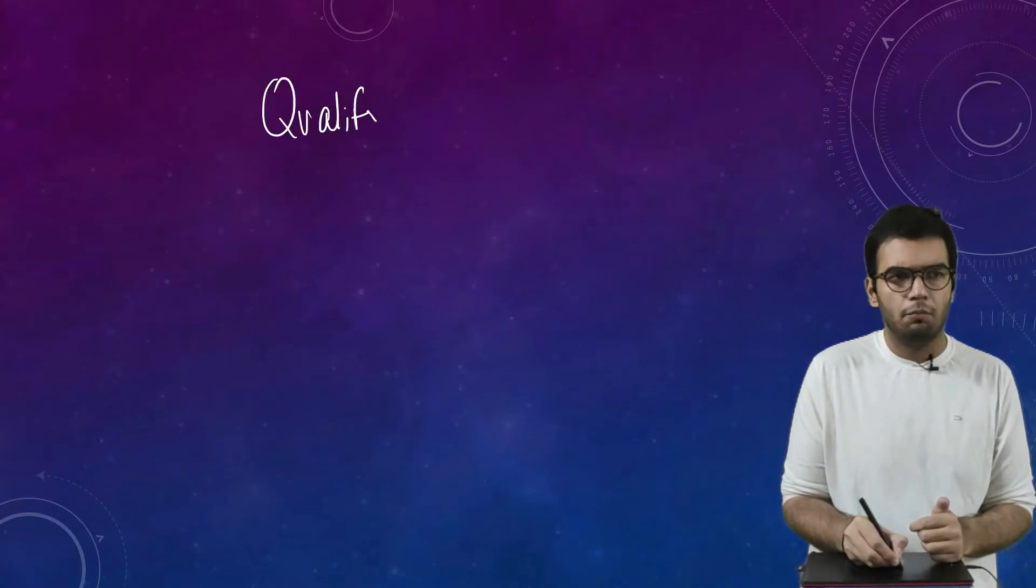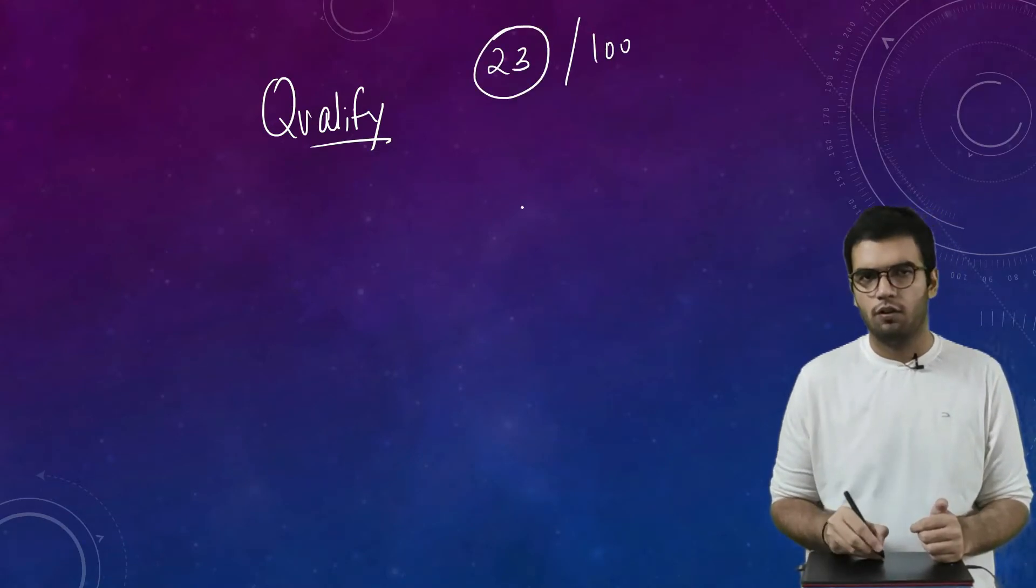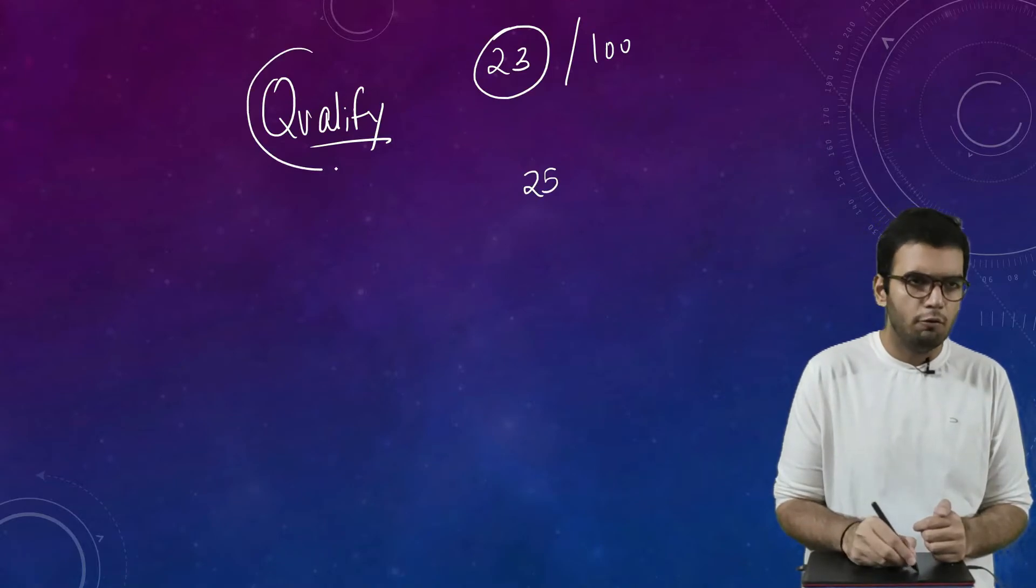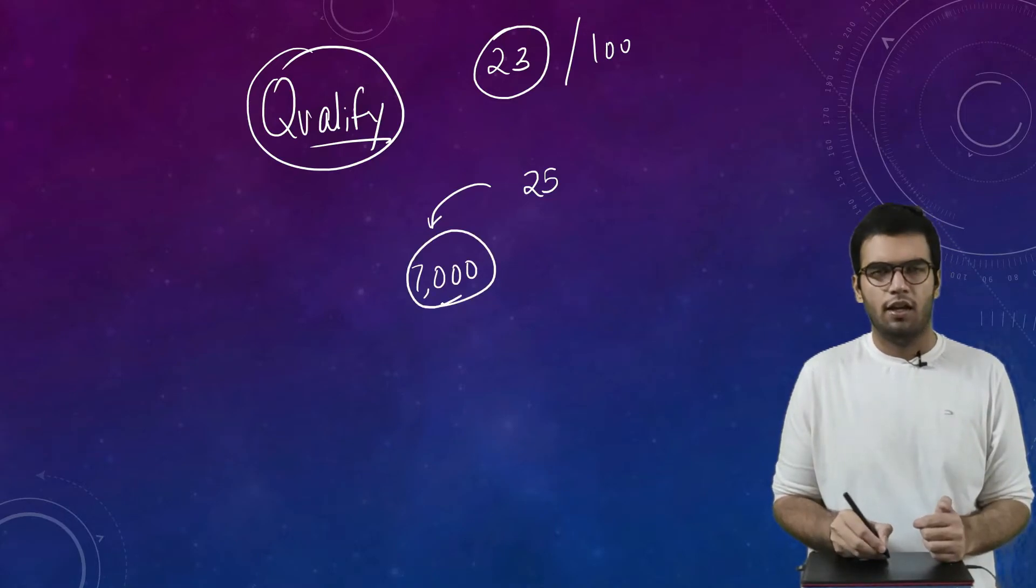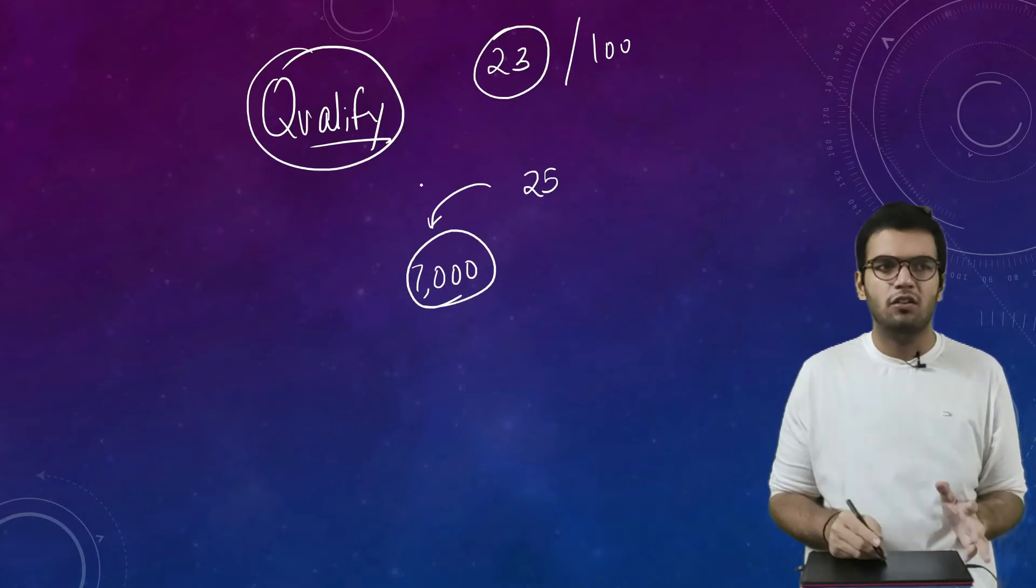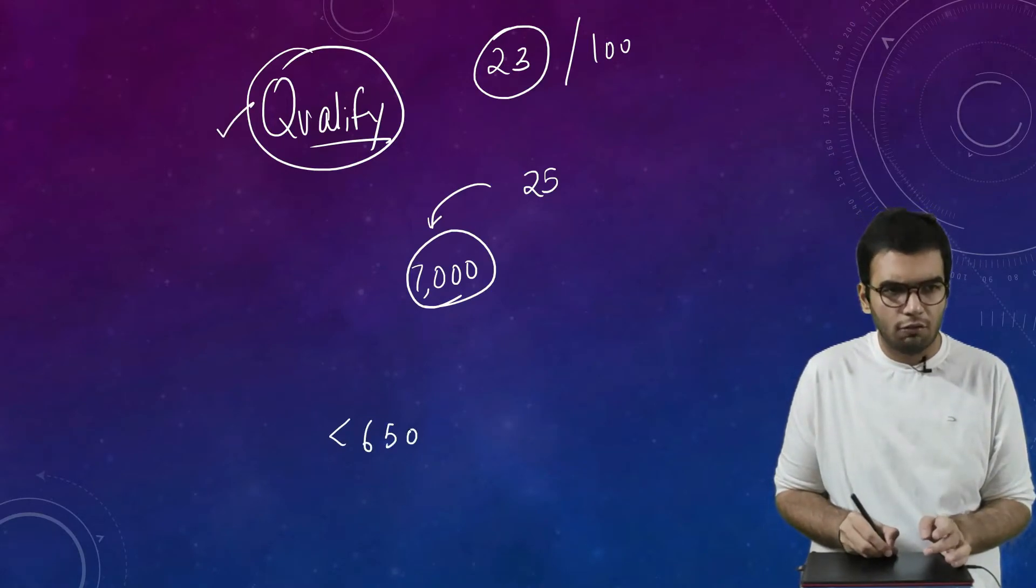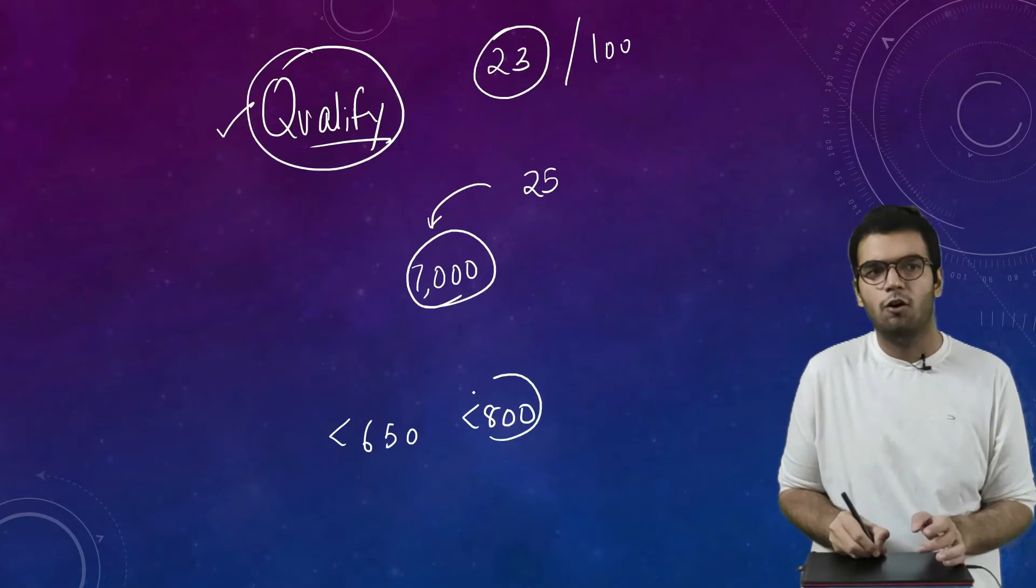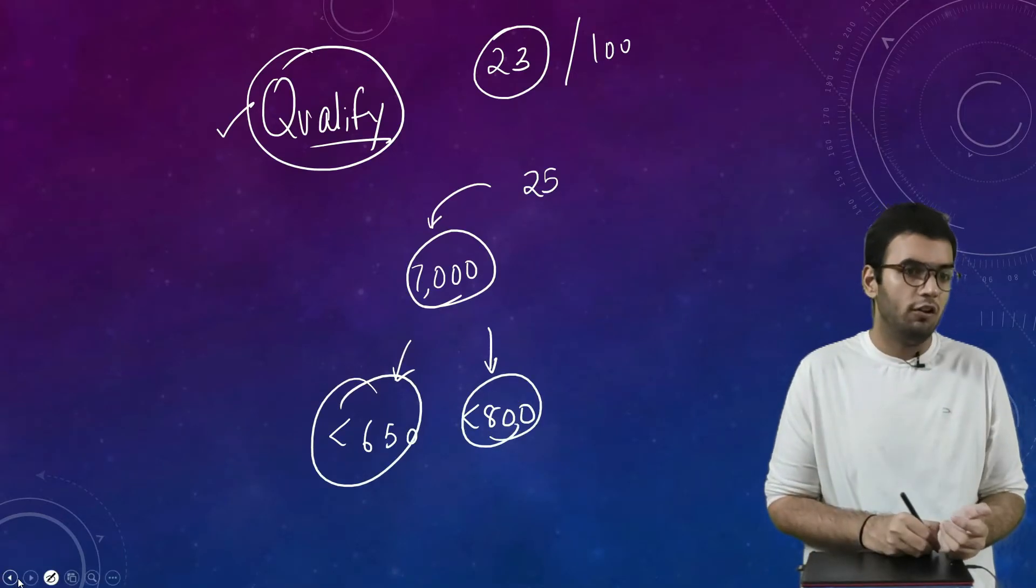If you think you are sufficient, because in IIT JAM there are two concepts. You can qualify the exam. What do you mean by the word qualify? Suppose out of 100, 23 is the cutoff marks and you score 25, so you have qualified the exam. But at 25 marks your rank will be nearly say 7,000, and in 7,000 you cannot do anything with that qualification. So basically, your rank should be less than 650, less than 800, or so on. So for that you have to get good rank.